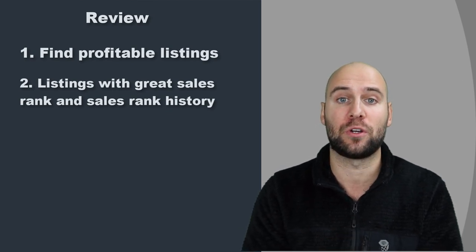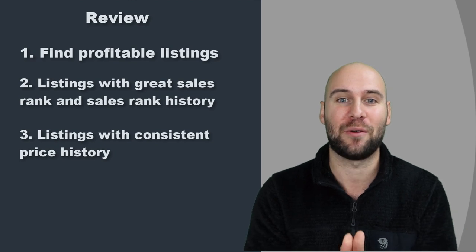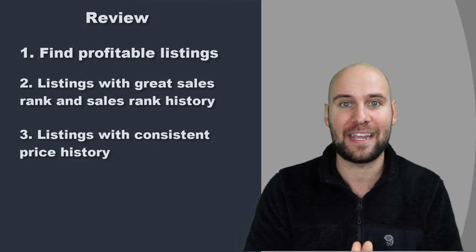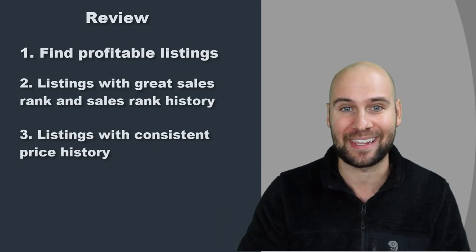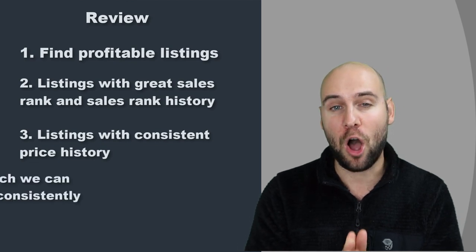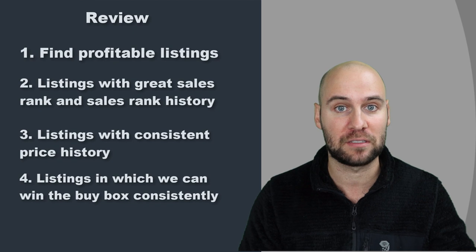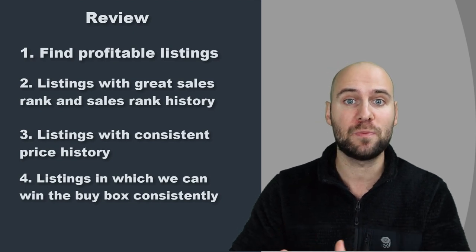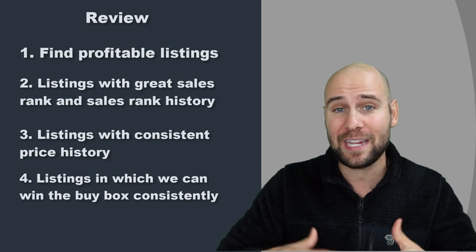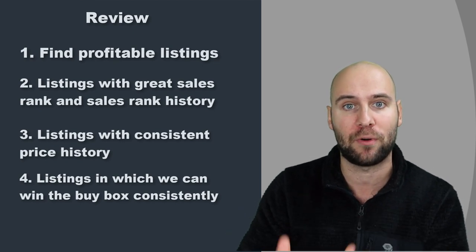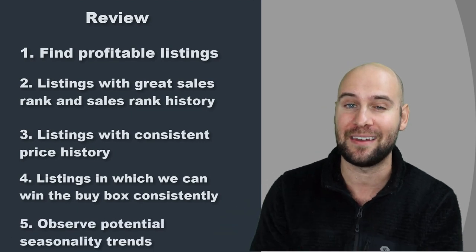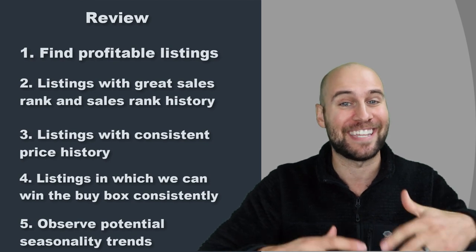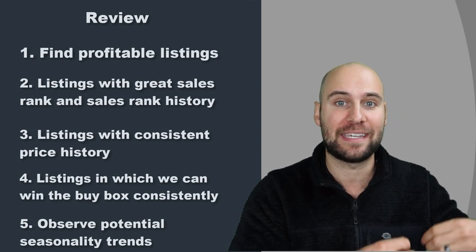To recap what makes a great listing: we want Amazon listings that are profitable, have a great sales rank with consistent sales rank history so we can plan inventory purchases accurately, and have consistent price history so we're not buying high and selling low later. We also want to confirm we can win the buy box at a profitable price, using Keepa to check who's been winning historically. Finally, we look at seasonality trends using Keepa or Helium 10 to make sure we're buying at the beginning of the season, not the end.